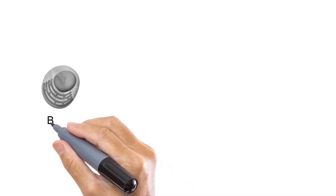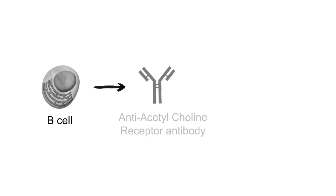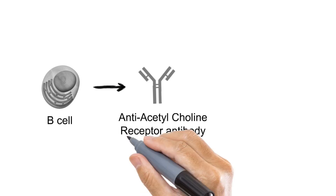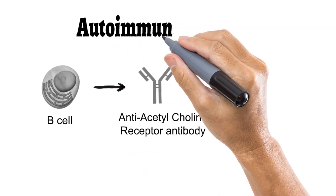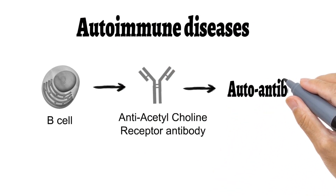But in Myasthenia Gravis, the patient's B cells produce antibodies against the acetylcholine receptor — that is, anti-acetylcholine receptor antibodies. Normally, B cells don't produce antibodies against our own molecules, that is the self-antigens. But in this case, antibodies are produced against the body's own cell molecules. Such conditions are called autoimmune diseases, and the antibodies involved are called autoantibodies.